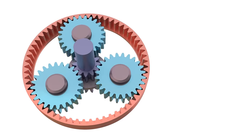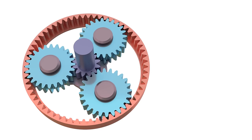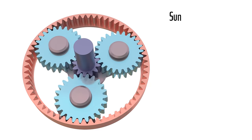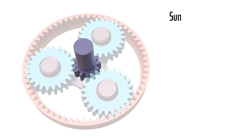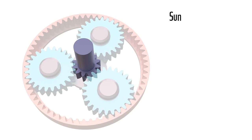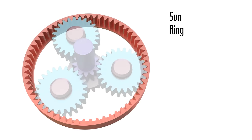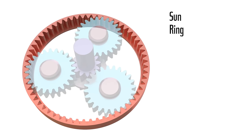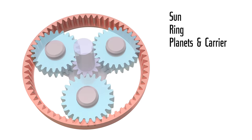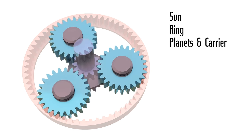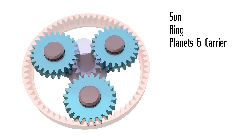A simple planetary gear system consists of three components. The gear in the center is called the sun gear. The outer gear with the teeth pointing inwards is called the ring gear. The three gears rotating around the sun gear are called planet gears, and the platform on which the planet gears are mounted is called the carrier.